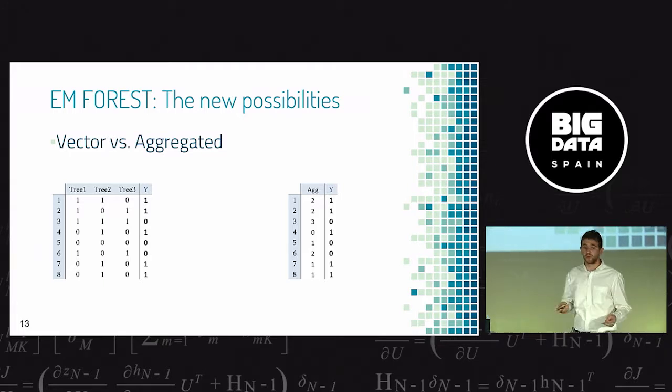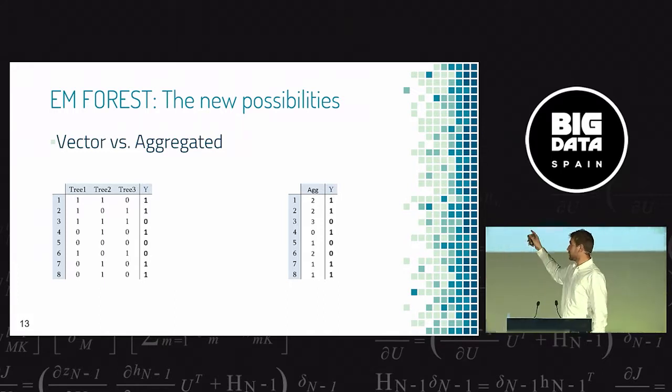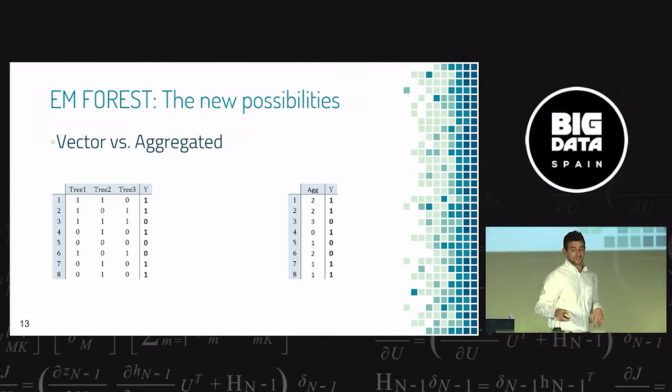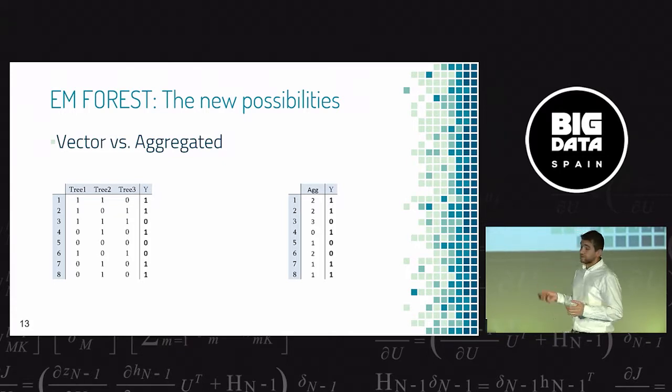You have two ways to apply this algorithm. One is the first we have seen, saving the outputs of the trees. And the second one is the aggregated mode, that means add the outputs of the trees. Against what I thought when I created it, the second one looks like it works better.